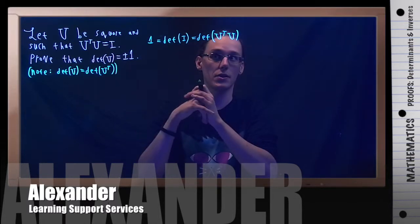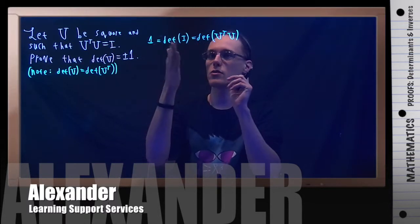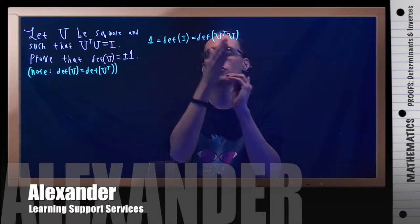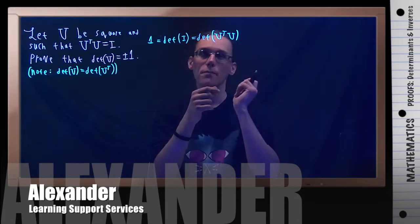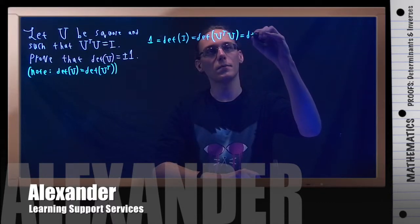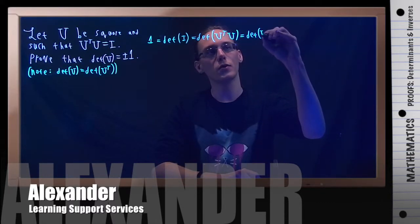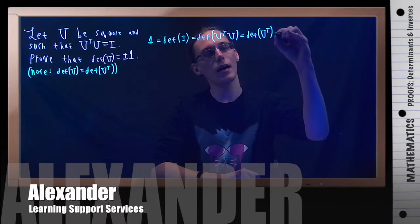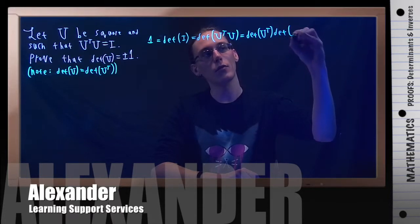I just need to figure out where the plus or minus comes from. I know that 1 equals the determinant of I equals the determinant of U transpose U. The determinant of a product is the product of the determinants, so this is the determinant of U transpose times the determinant of U.